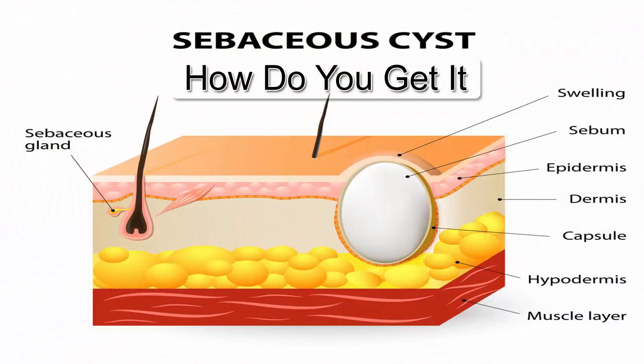How do you get cysts? Skin cysts are formed by multiplying cells moving inside rather than moving to the surface and shedding away as most skin cells do. Normally, skin is made up of two layers. The topmost layer is the epidermis, and the outermost of this is where skin cells push up dead ones and shed away. Why can't any medical person fully identify cysts? Because in some cases, it can occur due to genetics.